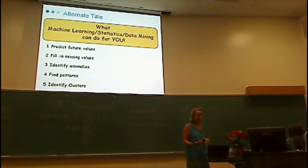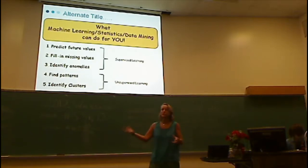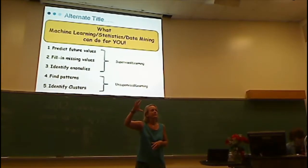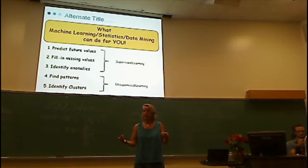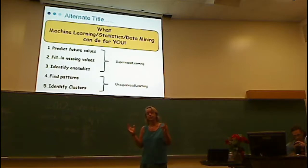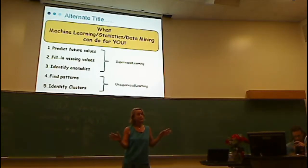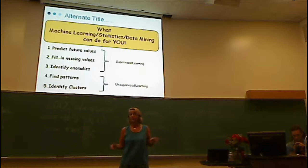Then there are other things like finding patterns and identifying clusters — all useful things machine learning can do for you. Traditionally in machine learning, the top three capabilities are grouped under the name supervised learning: you have some training data with the correct labels, you learn a model, then apply it to new data and make predictions. There's also a whole area called unsupervised learning where there's no teacher telling you the right answer — it's just you exploring the data trying to find patterns.